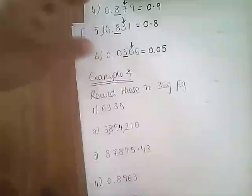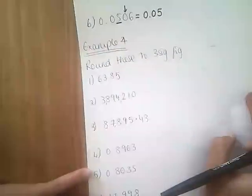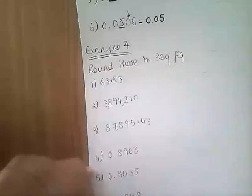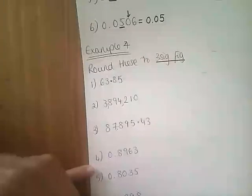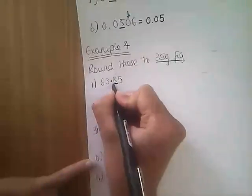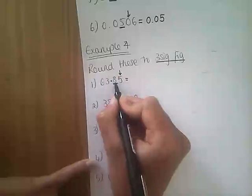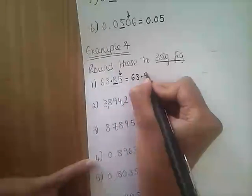Now we're going to our next example: rounding to three significant figures. First number: 63.85, rounding to three sig figs. Underline our third significant figure — here's our first, second, third. Is the number next door five or more? Yes — that rounds up to a nine. So it's going to be 63.9.